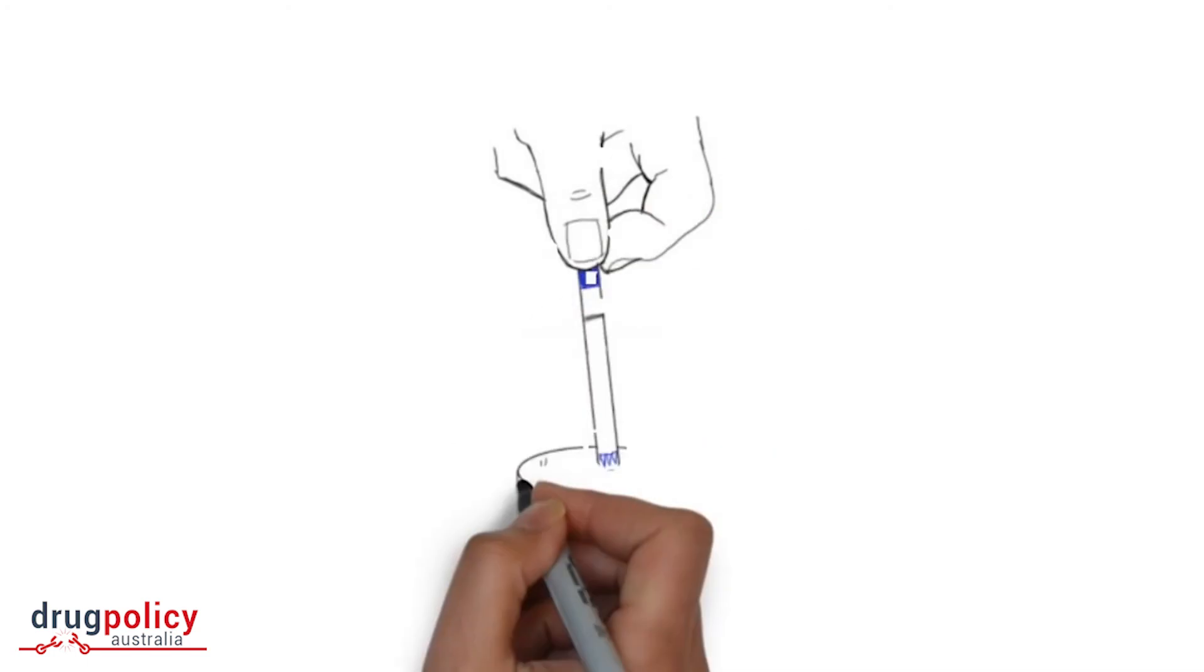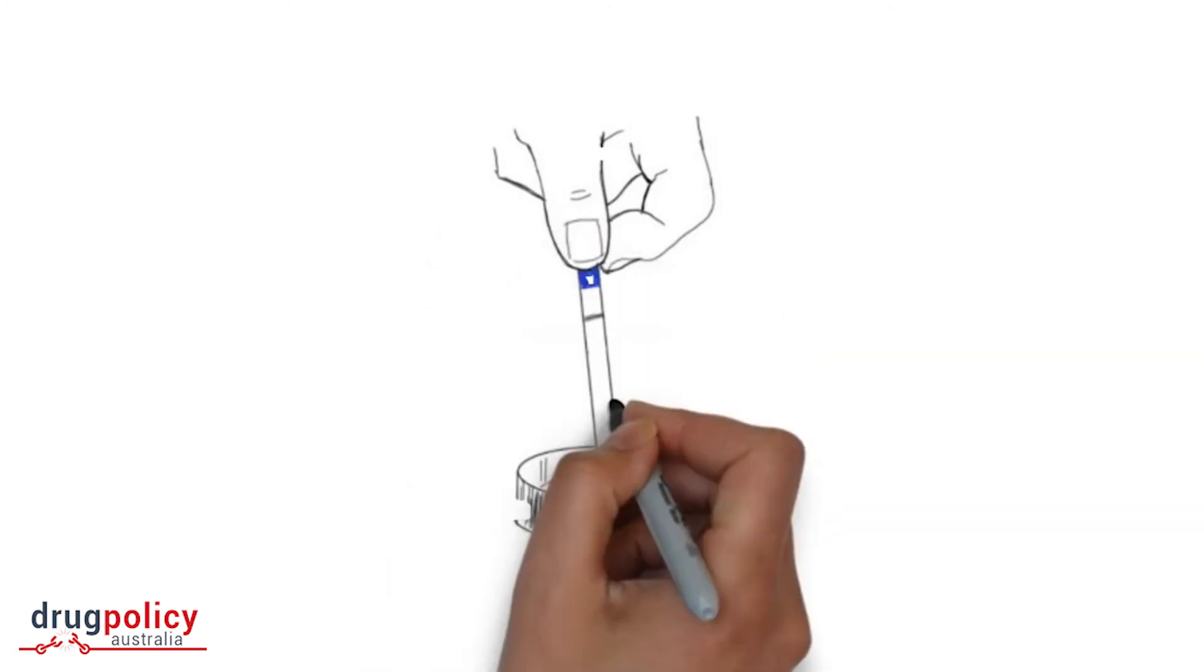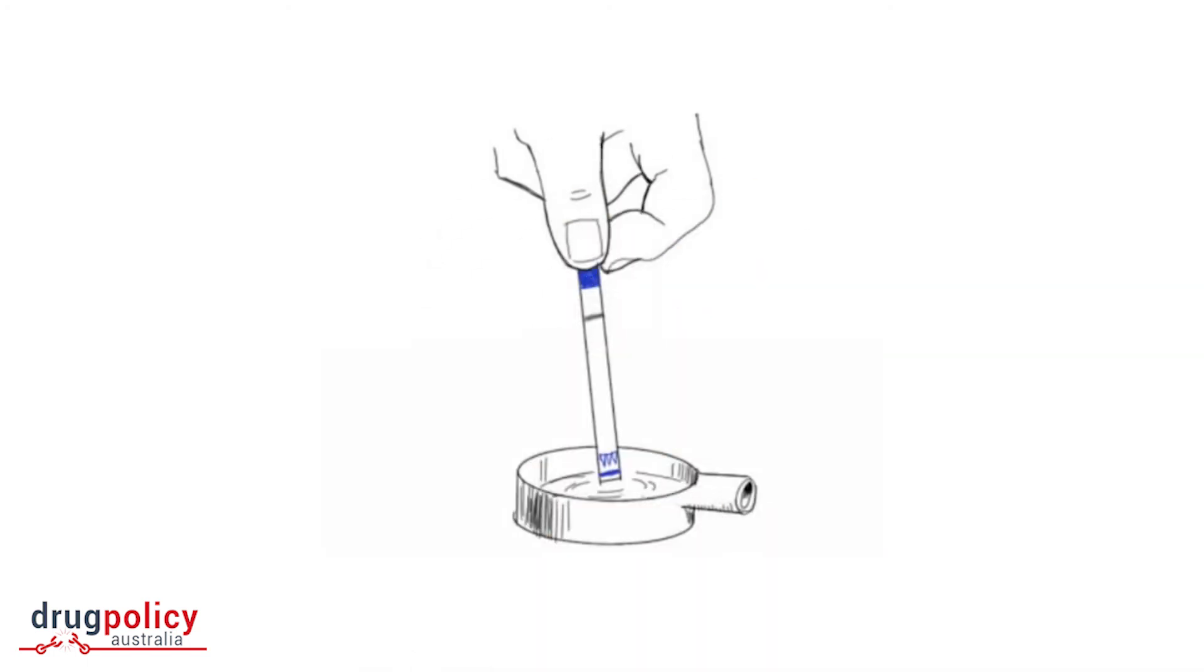Now add a little water back into the cooker. You are going to test the residue. Open a test strip and make sure to hold it by the top. Dip it into the cooker and keep it there for about 15 seconds.